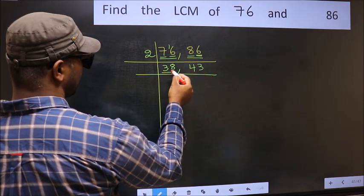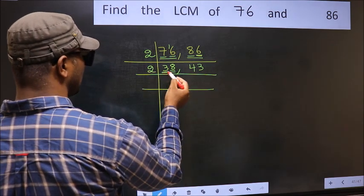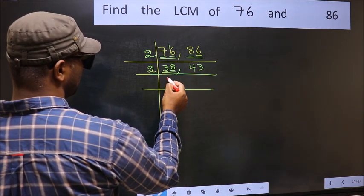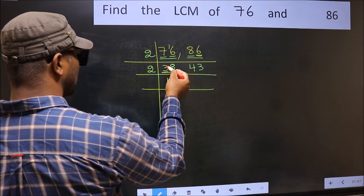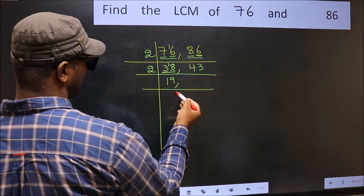Now we have 38. Last digit 8, even, so take 2. First number, 3. A number close to 3 in 2 table is 2, 1, 2. 3 minus 2, 1. 1 carried forward 18. When do we get 18 in 2 table? 2, 9, 18.